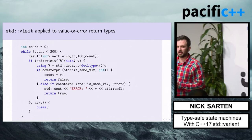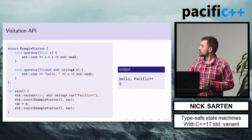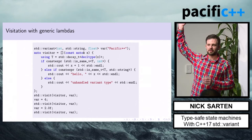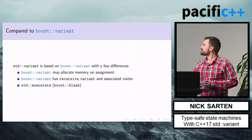Does anyone think the generic lambda version looks nicer than the previous functor version? Who prefers generic lambdas? Okay, that's quite an indictment.